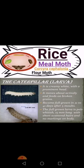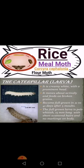The caterpillar or larva is creamy white with a prominent head. It moves about actively and feeds on broken grains. It is full-grown in 21 to 41 days after 5 moults. The full-grown larva is pale whitish, 15 mm long, with short scattered hairs and no markings on the body.